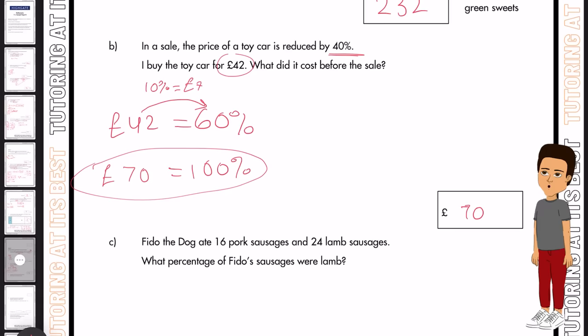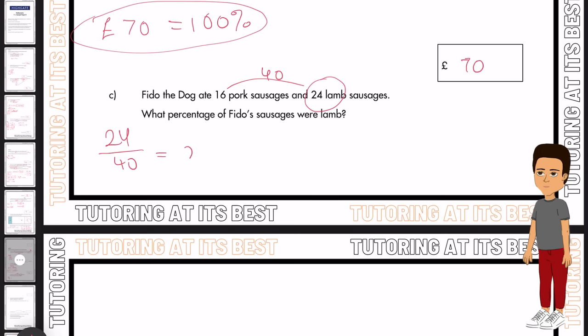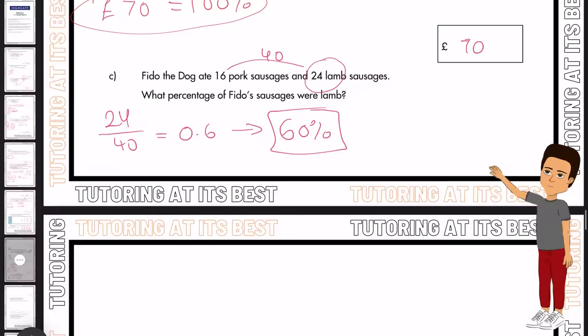Part C. Fido the dog ate 16 pork sausages and 24 lamb sausages. So what percentage of Fido's sausages were lamb? Well, we know there's 24, and we know in total there's 40. So we'll have 24 divided by 40, which gives you 0.6. And that's the same as 60%, and so that is your answer.